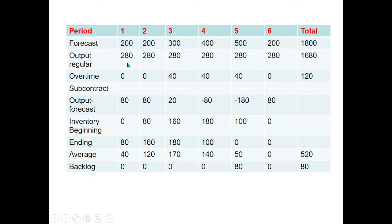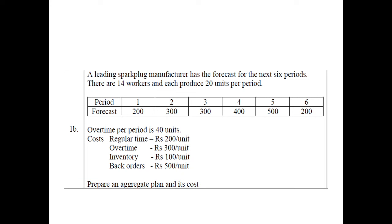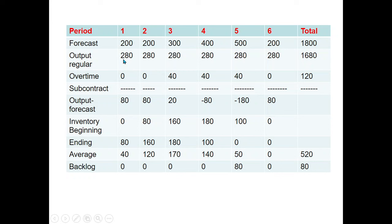The next row is 'Output Regular' — how many spark plugs we can manufacture each month working in regular time. From the problem, there are 14 workers and each produces 20 units per period. Multiplying 14 by 20 gives 280 spark plugs per month in regular time. So every month in regular time we can produce 280 spark plugs, totaling 1,680 over six periods.